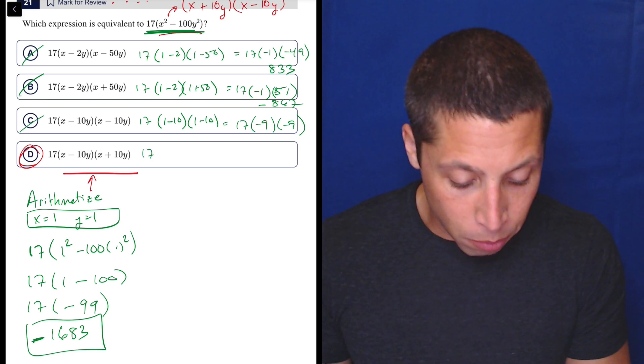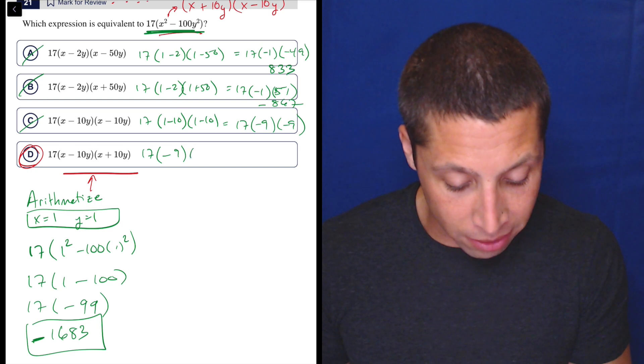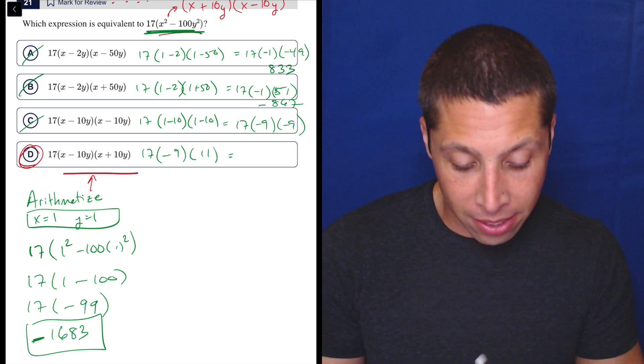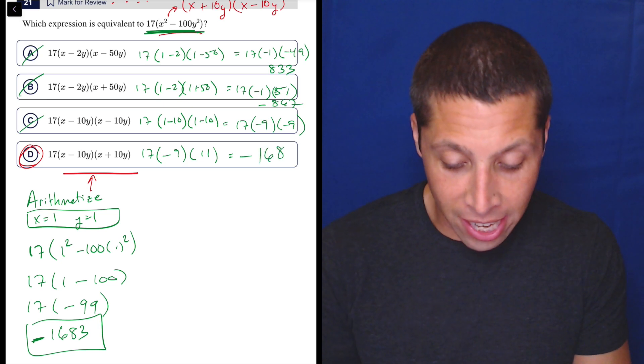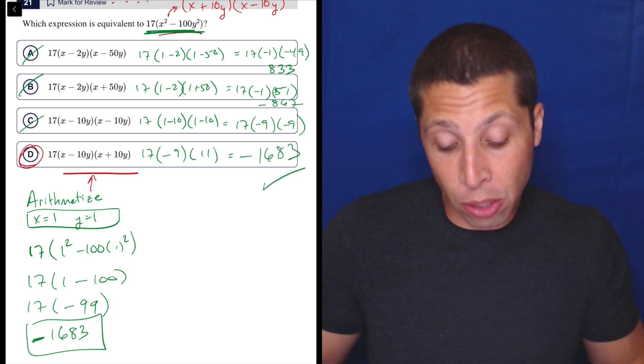So if I do the same thing with D, 17 times 1 minus 10, so that's negative 9. 1 plus 10 is 11, 17 times negative 9 times 11 is negative 1683. Exactly what I wanted. So yeah, Arithmetize works.